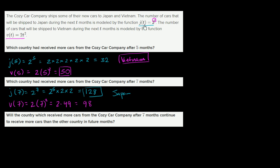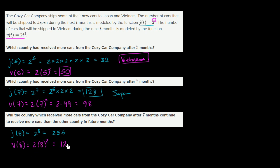Once the exponential function passes up the quadratic, it just keeps increasing at a faster and faster rate. For month 8: j(8) = 2 to the eighth power = 256 cars. And v(8) = 2 times 8 squared = 2 times 64 = 128. Notice that now we have shipped twice as much to Japan as to Vietnam, which wasn't the case at seven months.